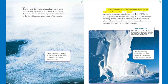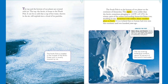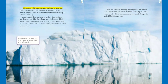The South Pole is at the bottom of our planet on the continent of Antarctica. This region is even colder than the Arctic, sometimes plunging to negative 125 degrees Fahrenheit, which is negative 87.2 degrees Celsius. In winter, parts of the oceans surrounding Antarctica freeze over, doubling its size. Antarctica is the coldest, driest, windiest place on earth. It is so isolated that no human had even seen this continent until 200 years ago. The ice covering Antarctica contains about 70 percent of the world's fresh water.